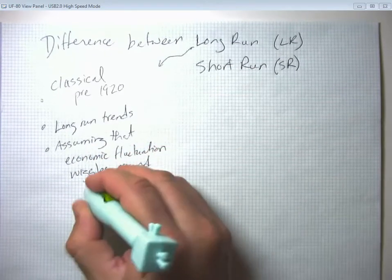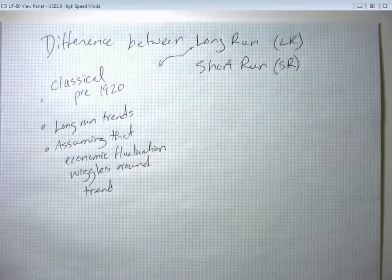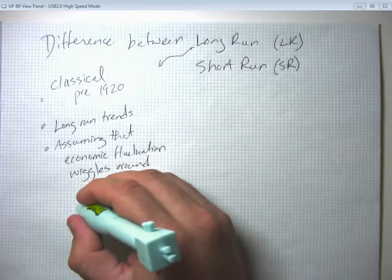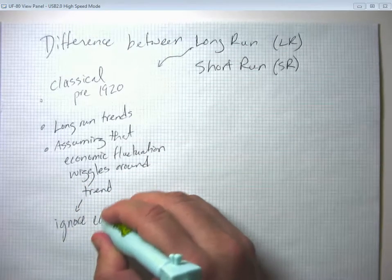And that might be true, it might be true that economic fluctuations are just wiggles around the trend. But they also took this as a license to basically ignore economic fluctuations.